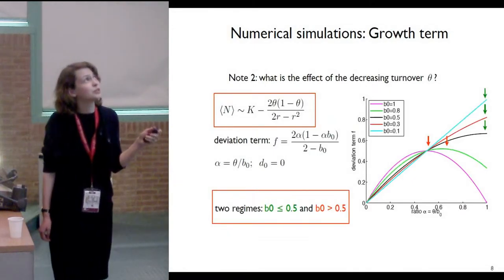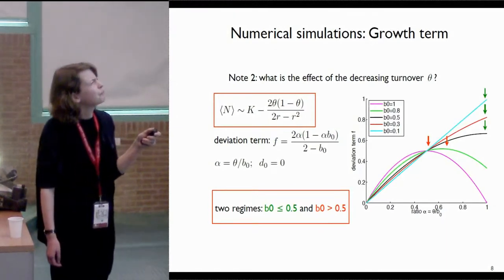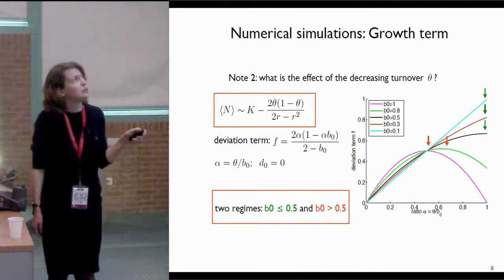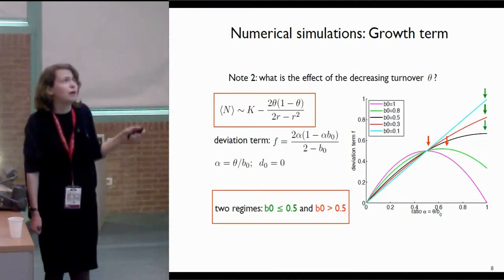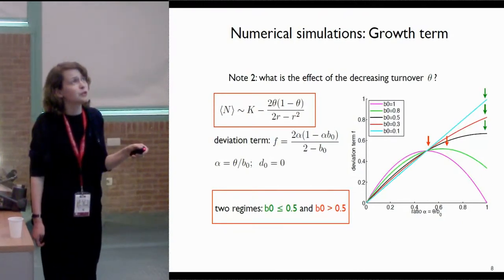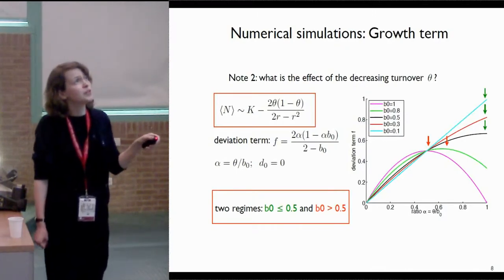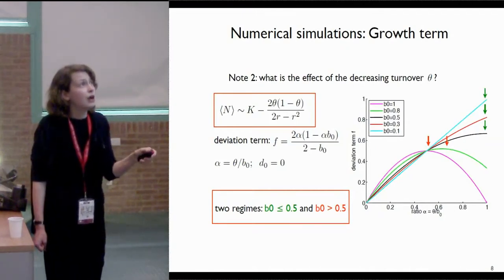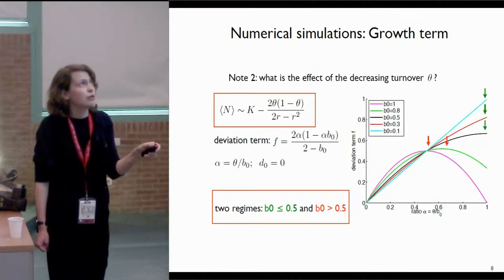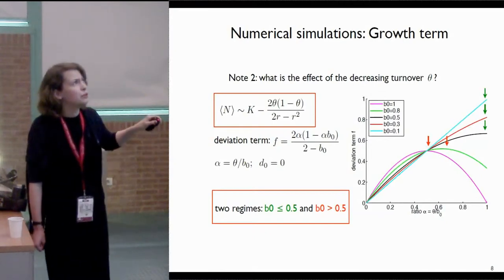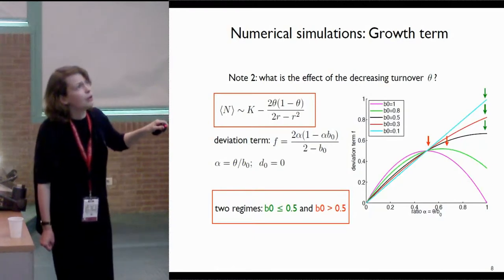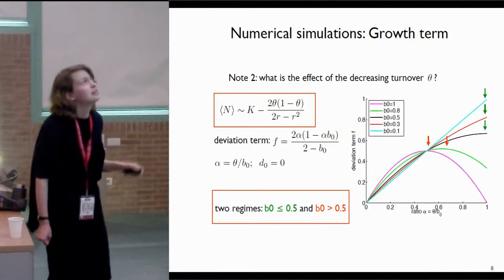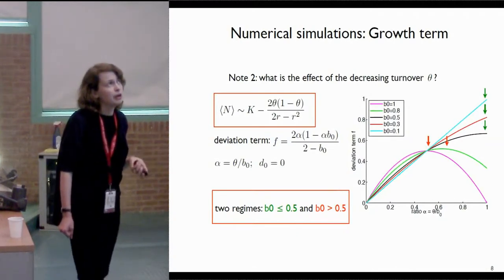The second point is the dependency on the turnover rate. We look at this approximation and describe the deviation term as a function of the ratio theta over b0, where d0 is zero, and here we plot the deviation term versus that ratio. Different colors represent different values of b0, and from this plot we find two regimes. The first regime is when b0 is smaller than 0.5: we can fix b0 and decrease the turnover rate, and the deviation term always decreases. However, when we are in the regime of b0 greater than 0.5 and we decrease the turnover rate, at first we increase the deviation term and then it declines, and this arises because of the nonlinear term due to the binomial nature of our model.